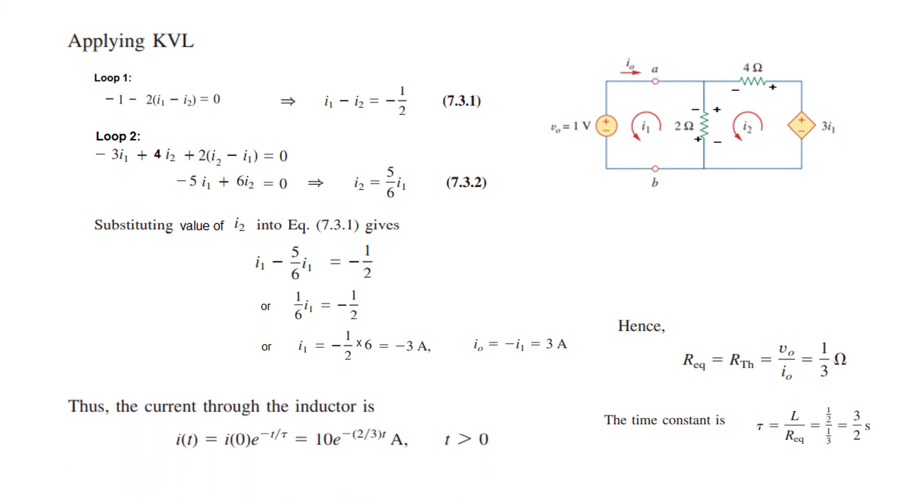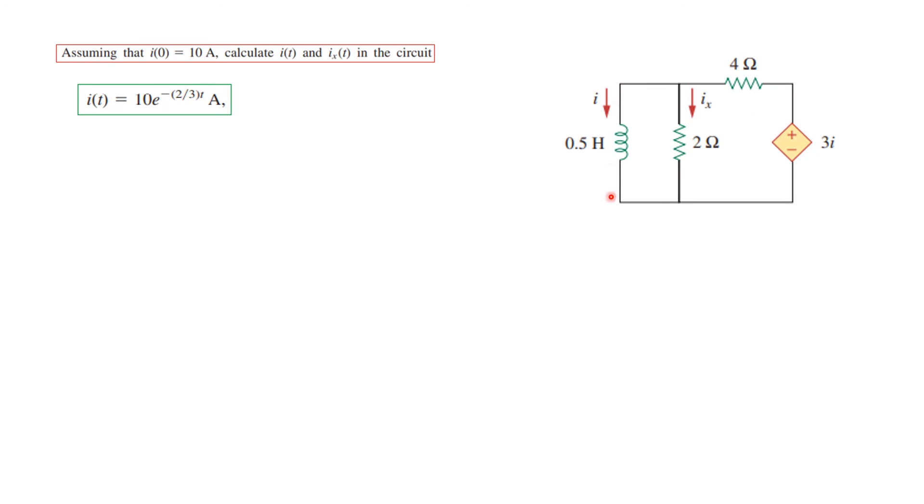Now we are ready to write the current equation: I(t) = I₀e^(-t/τ). I₀ was 10 given in the question, and τ is 3/2. Putting this is the answer that we get for the inductor current. So the inductor current we have found.